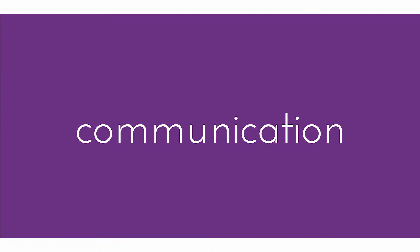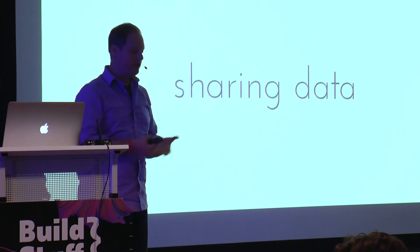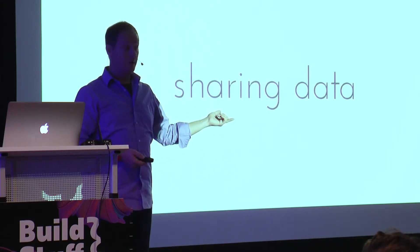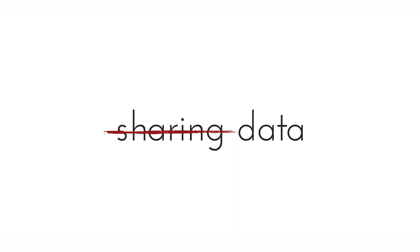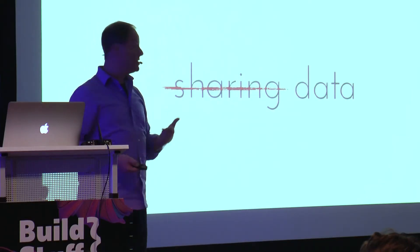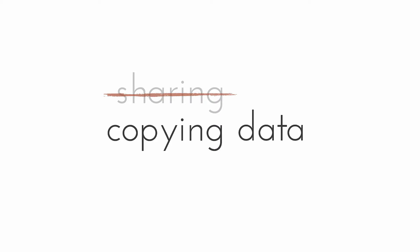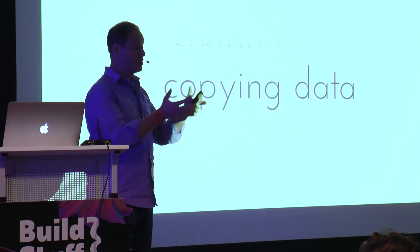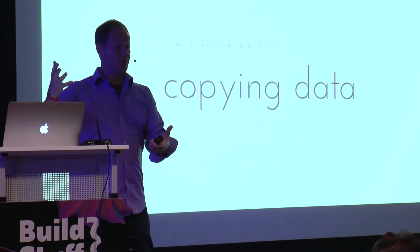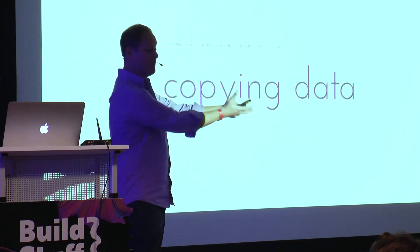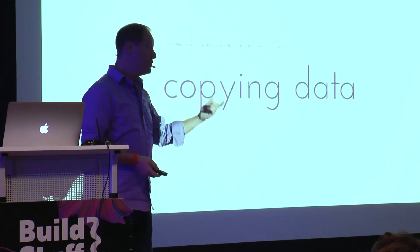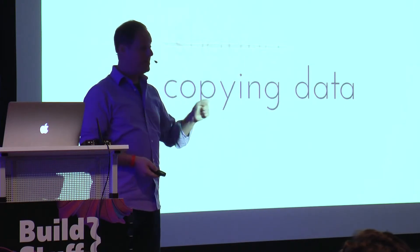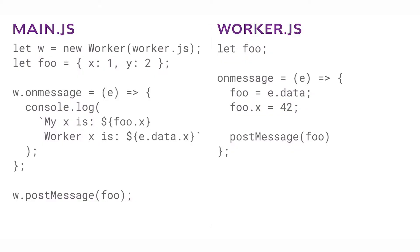How do we communicate more with these things? I said we share data, but actually there is no data sharing with web workers — it's an important distinction. What you're really doing is copying the data. It's a messaging system: not transferring, not sharing. If I have a large object and I need to pass it to a worker and back regularly, every time I do that I'm cloning the data, not passing by reference.